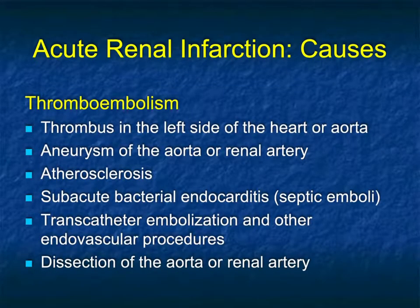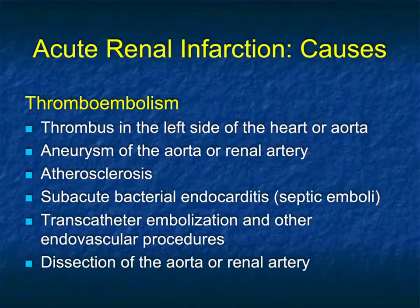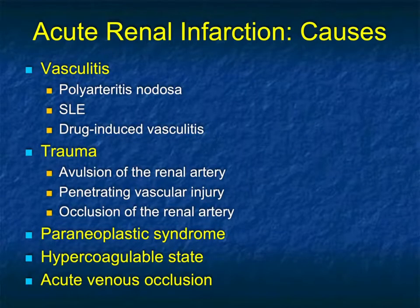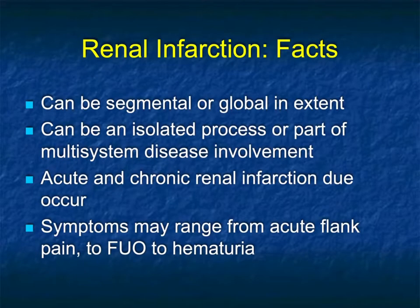We talked about infection and abscesses. Another thing to talk about is infarction. Infarction can be due to a number of different things: thromboembolism, thrombus in the left side of the heart or aorta, aneurysm of the aorta or renal artery, plaque from atherosclerotic disease, septic emboli in a patient with bacterial endocarditis, transcatheter embolization, complications from other procedures, and even dissection of the aorta into the renal arteries. We also see infarction in vasculitis — polyarteritis nodosa is a good example — as well as trauma with injury to the renal artery, paraneoplastic syndromes, hypercoagulability states, and acute venous occlusion.